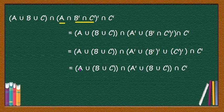That is equal to (A ∪ B ∪ C) ∩ (A' ∪ B ∪ C) ∩ C', because B'' = B and C'' = C.